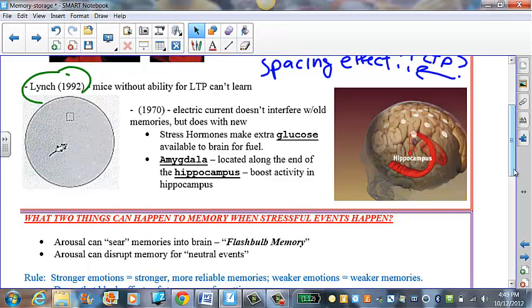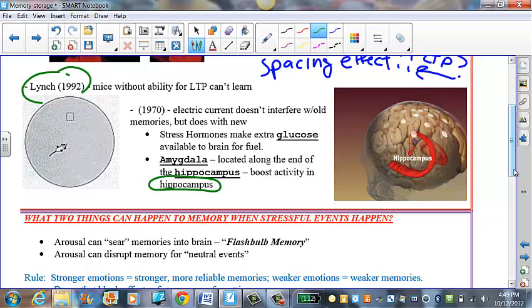But what happens if part of the rat's brain, the hippocampus, is damaged? And the hippocampus is part of the brain in which memories, new memories, seem to be formed early, and it seems to be kind of that bridge between the short-term and the long-term memory.